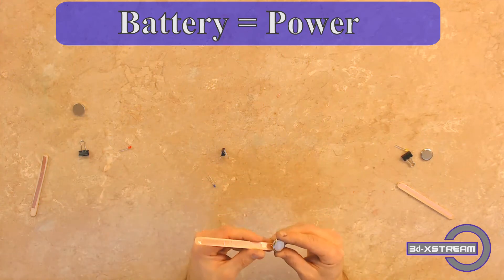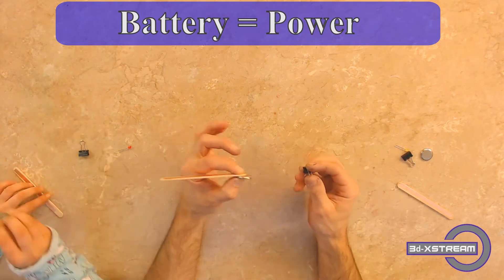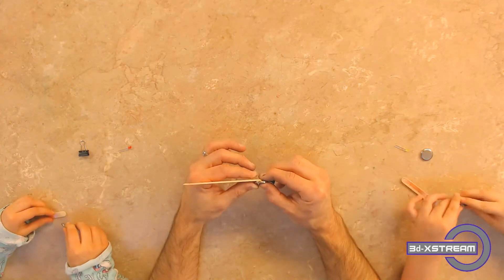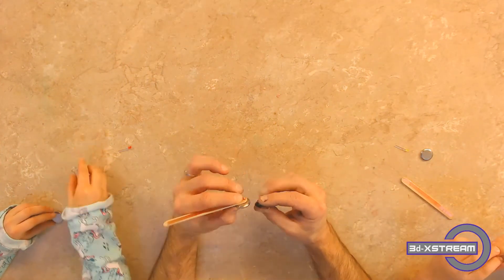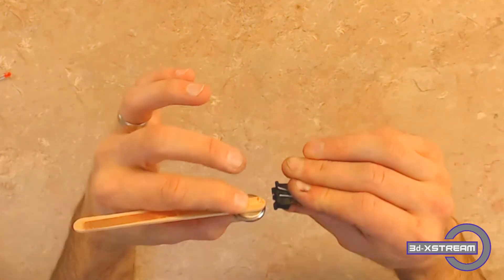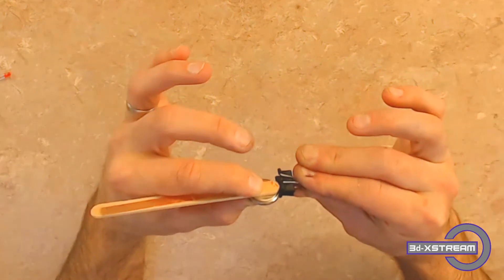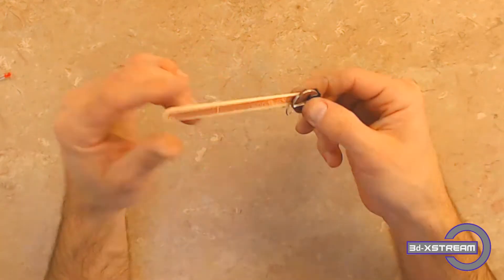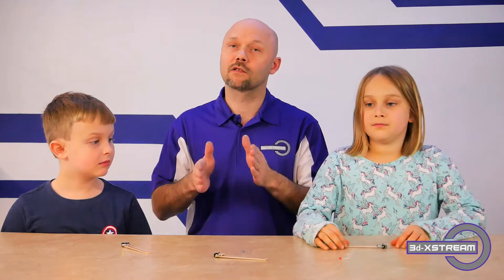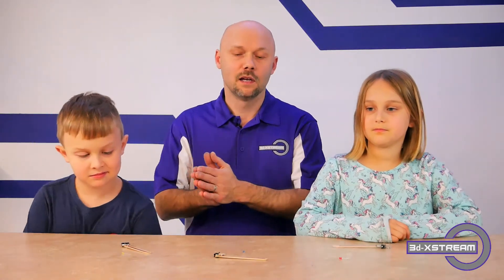We're going to take our battery and a binder clip and secure it to one side. Put the battery and popsicle stick flat against each other, take the binder clip and clip it on there and fasten it. Now we each have our circuit made with our power source and battery secured in place.